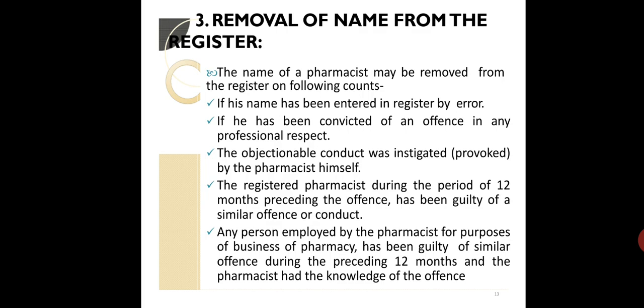Removal of a name from the register may occur on the following counts: if the name has been entered in the register by error; if the pharmacist has been convicted of an offence in any professional respect; if the objectionable conduct was instigated or provoked by the pharmacist himself; if the registered pharmacist, during the 12 months preceding the offence, has been guilty of a similar offence or conduct; or if any person employed by the pharmacist for the purposes of pharmacy business has been guilty of a similar offence during the preceding 12 months and the pharmacist had knowledge of the offence.